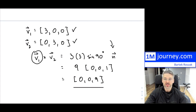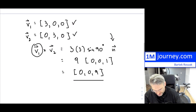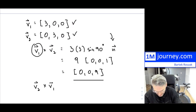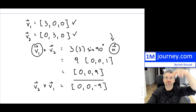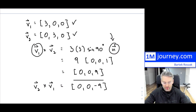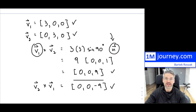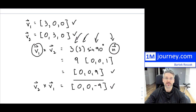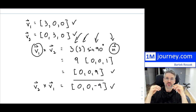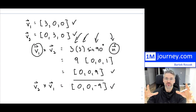If instead we did V2 crossed with V1, the calculations are the same — the only difference is that now my normal is pointing downwards. So what you would find is that your cross product would be pointing downwards. The cross product doesn't give you a unit vector out — it does have a magnitude which can be greater than 1 or even less than 1, depending on the values and the sine of theta. Unlike the dot product, it gives you a vector.